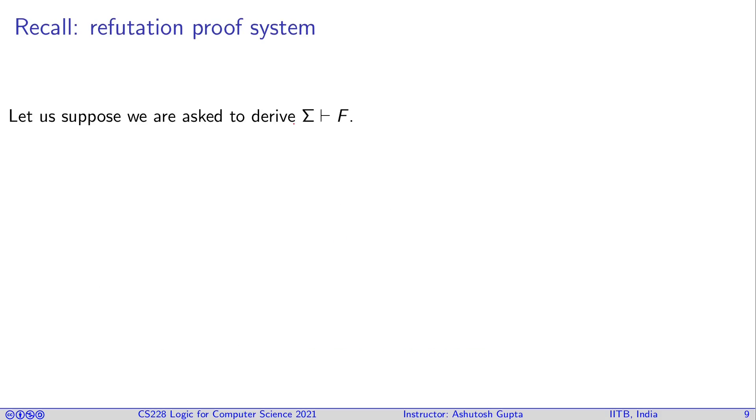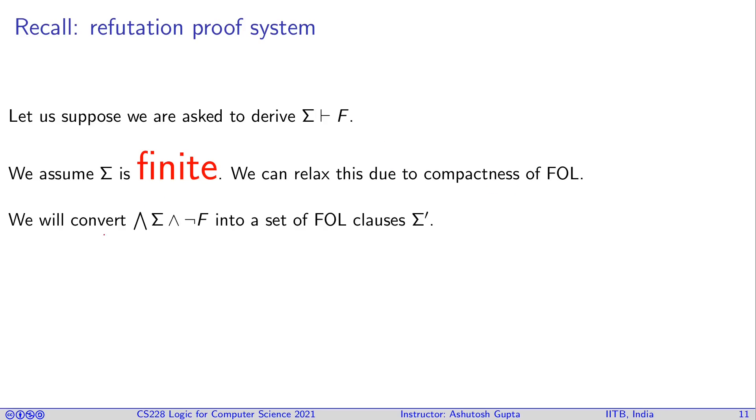Let us suppose we ask to derive that sigma proves F. What do we do? We assume sigma is finite. We can relax this condition due to compactness of first-order logic. We will convert a conjunction of sigma and not of F and turn into a first-order clauses called sigma prime. And we apply the refutation proof system on sigma prime. If it gives us false, then this original statement was derived.